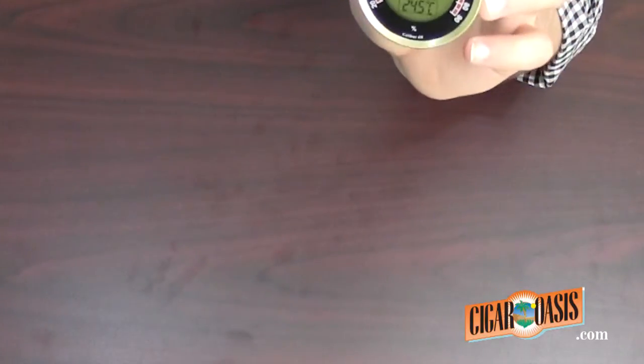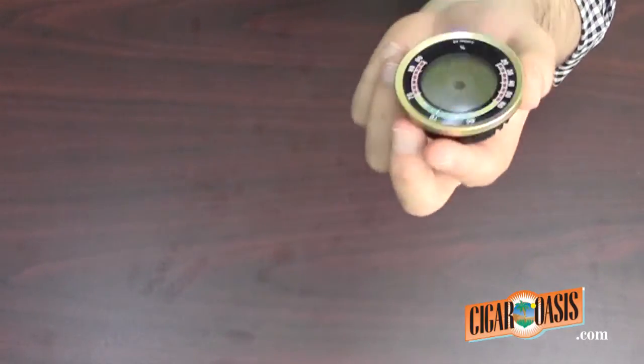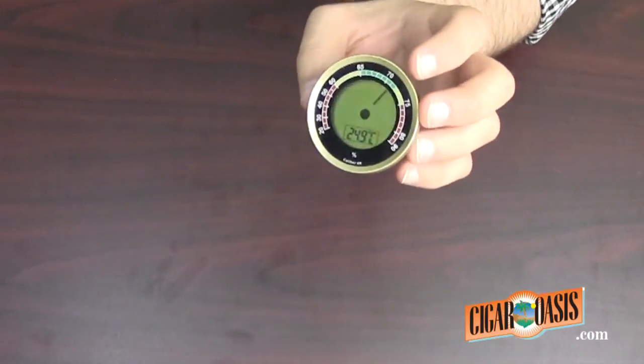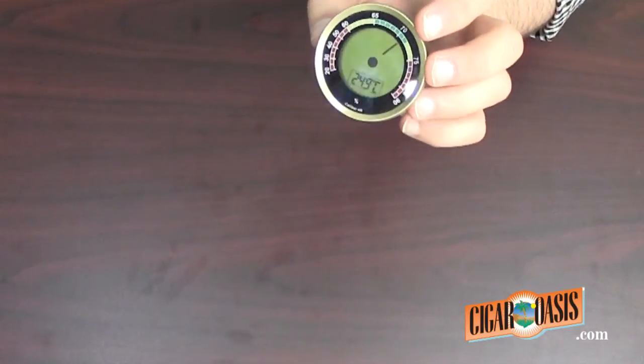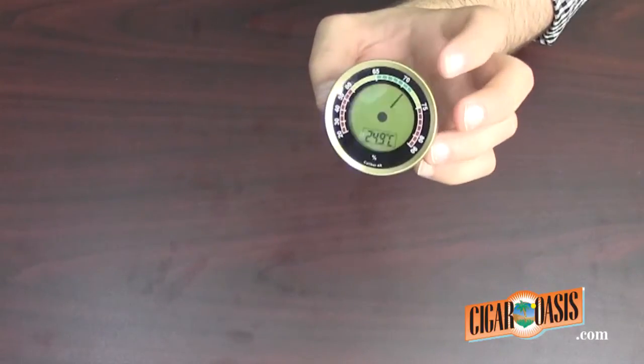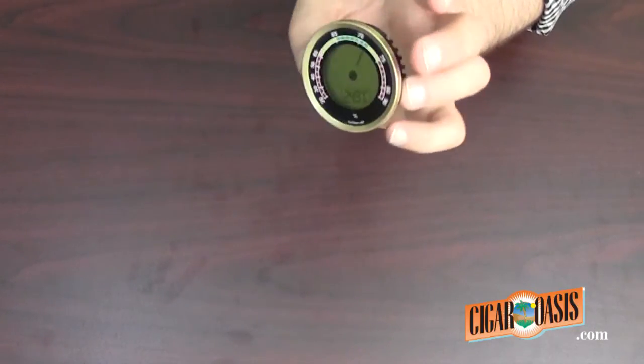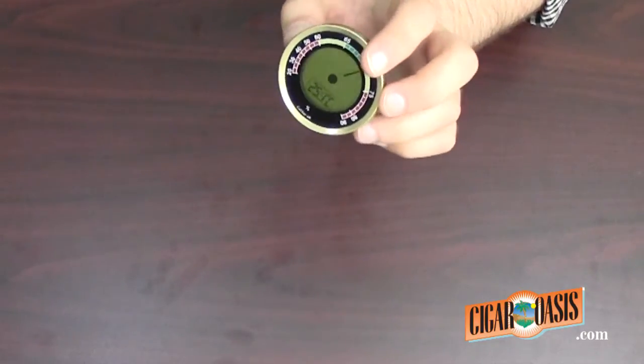That is how you recalibrate the Caliber 4R Hygrometer. Give it a couple hours before doing the process again. Let it adjust and try not to do this process more than three times in a day as it can mess the sensor.